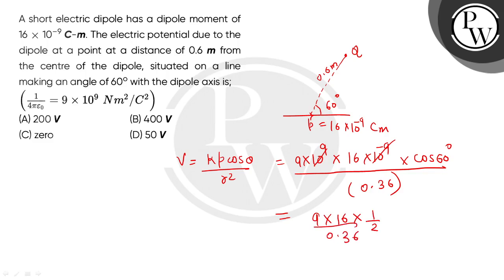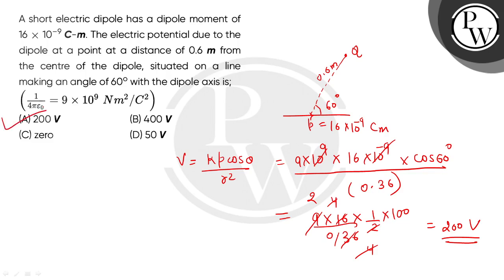Now simplifying: the powers of 10 cancel. cos 60° = 0.5, and 9 × 16 × 0.5 divided by 0.36 gives 200. So the potential is 200 volts. Option A would be the correct choice. I hope you understood. Thank you so much.